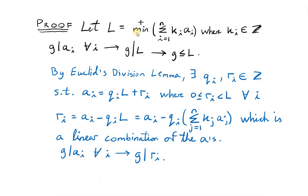Proof. Let l be the minimum positive linear combination of all the a's, with ki an element of Z. Since the greatest common divisor of all the a's divides each of the a's, g will divide any linear combination of all those a's. If g divides l, obviously g has to be less than or equal to l. Next, we apply Euclid's division lemma to the integers ai and l, which tells us there exist integers qi and ri such that ai equals qi times l plus ri, where ri is non-negative and ri is less than l.